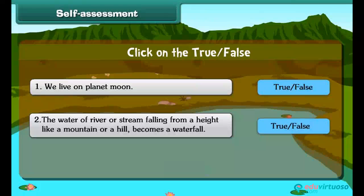Check your understanding: Click on the true or false. Statement 1: We live on planet moon. Statement 2: The water of a river or stream falling from a height like a mountain or a hill becomes a waterfall.